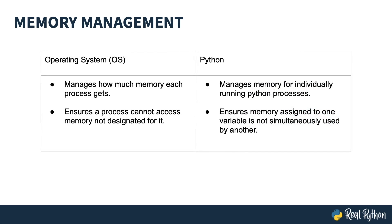You can think of memory management on two levels. At one level, we have the operating system, which manages how much memory each running application or process can use. This is one of the most important jobs for the OS — making sure that the memory assigned to your running web browser is not used by your email client. At another level, we have memory management within Python itself. Python makes sure that any programs you have running run safely and efficiently, and that memory assigned to one variable is not simultaneously used by another. Exactly how this happens is the focus of this course.